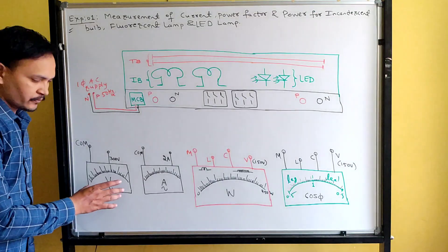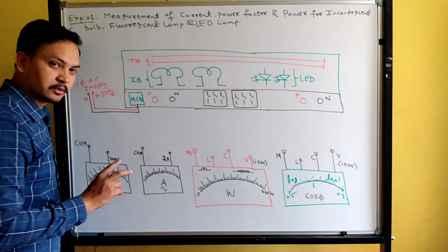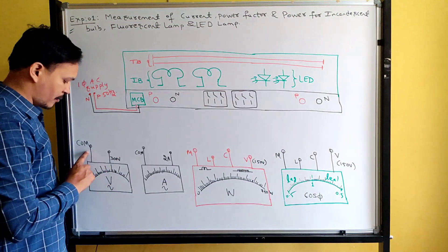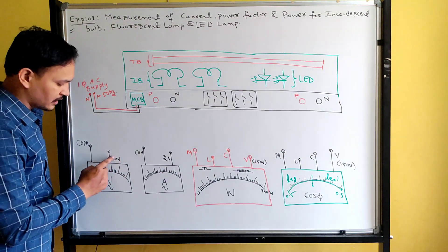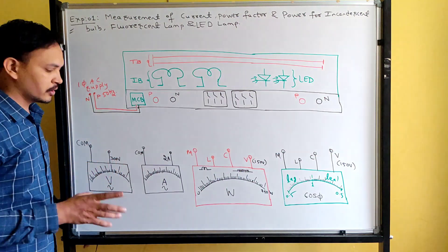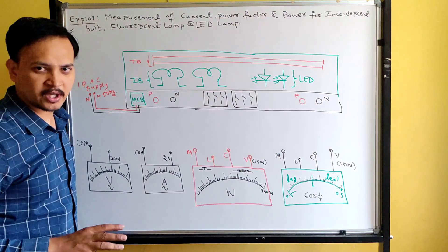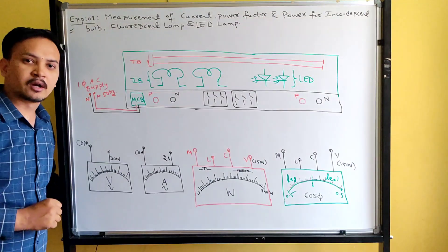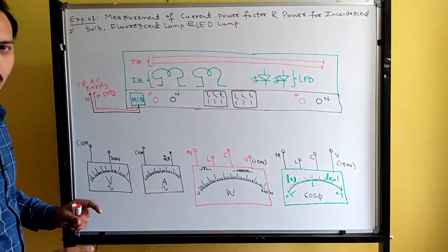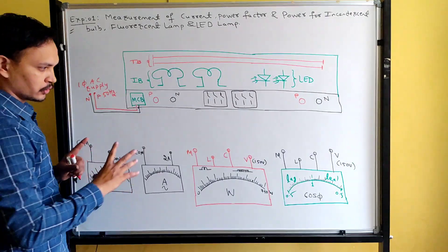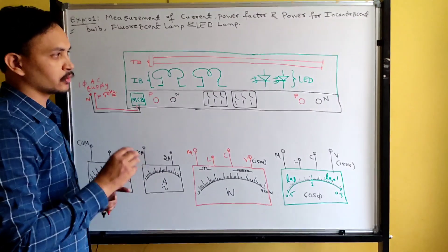Don't connect the 600 volt terminal on the voltmeter. Since we are working on single phase AC supply, select the 300 volt range. Now, please observe carefully how to do the connections, how to switch on the loads, and how to take readings.